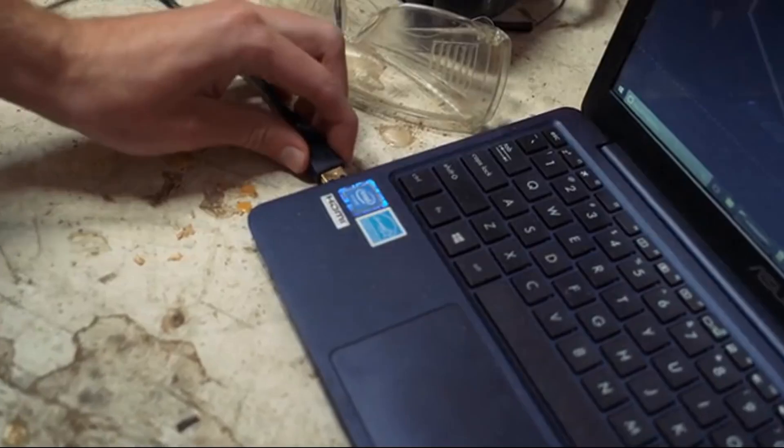Maslow can be put together in a weekend using only a Phillips screwdriver, a pair of pliers, and a handsaw. Maslow connects to your Mac, Windows, or Linux computer using a standard USB port.